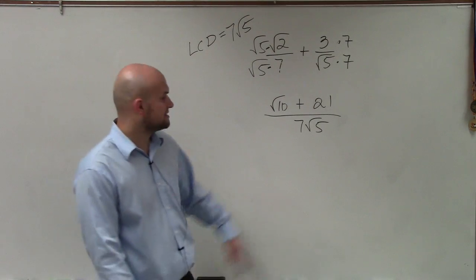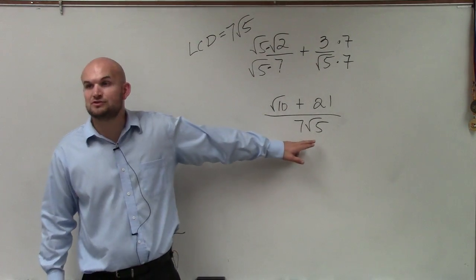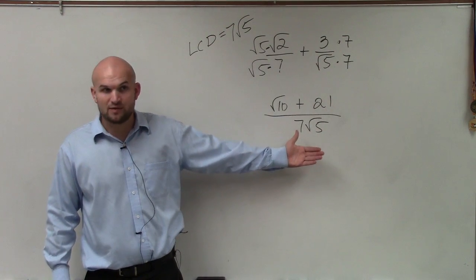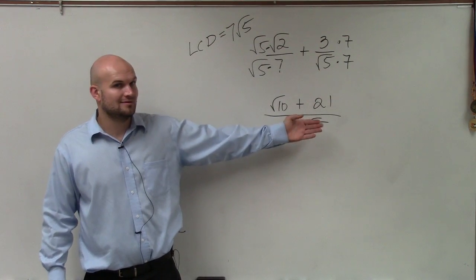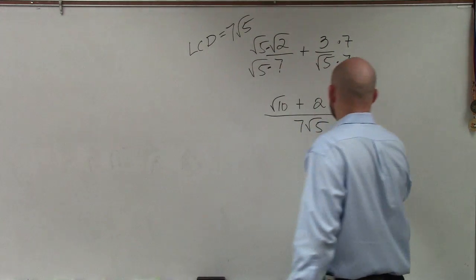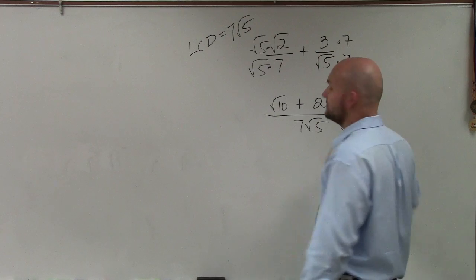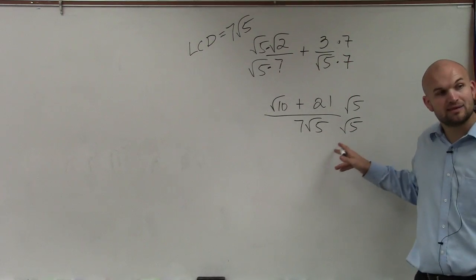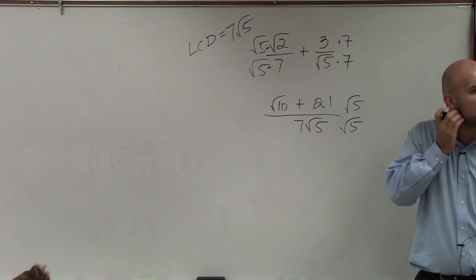The problem, though, is we have √5 in the denominator. So to get rid of that, we need to rationalize the denominator. That means I need to multiply by √5 on the top and bottom. Now, multiplying the bottom is not a problem because we just have a monomial.